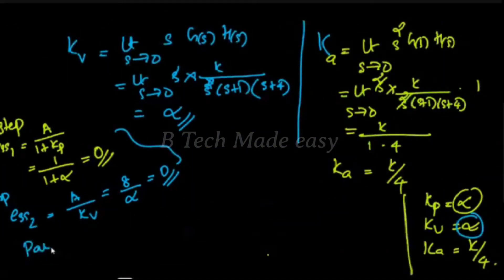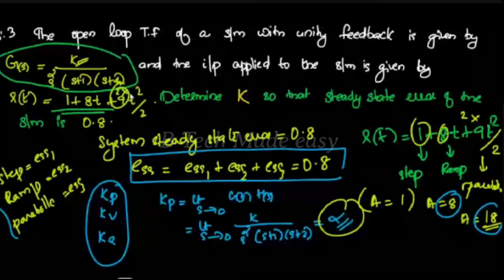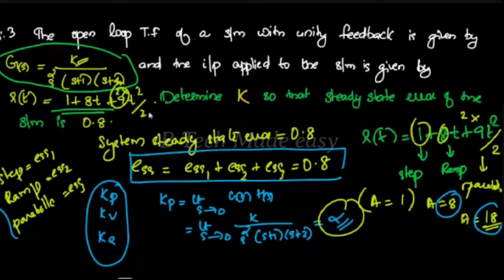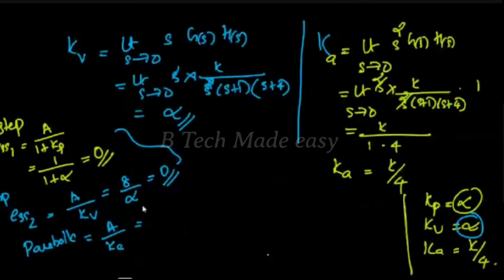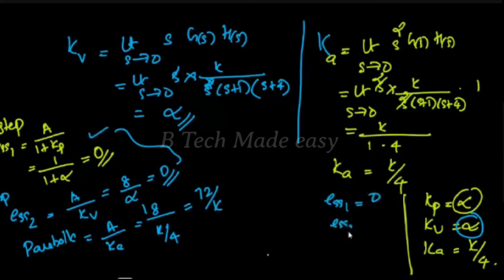For the parabola input, ESS3 equals A divided by Ka. The parabola input is t-squared by 2, so A equals 18. Therefore ESS3 equals 18 divided by Ka, where Ka equals K by 4. So ESS3 equals 18 divided by (K/4), which equals 72 divided by K. So ESS1 is 0, ESS2 is 0, and ESS3 is 72 divided by K.